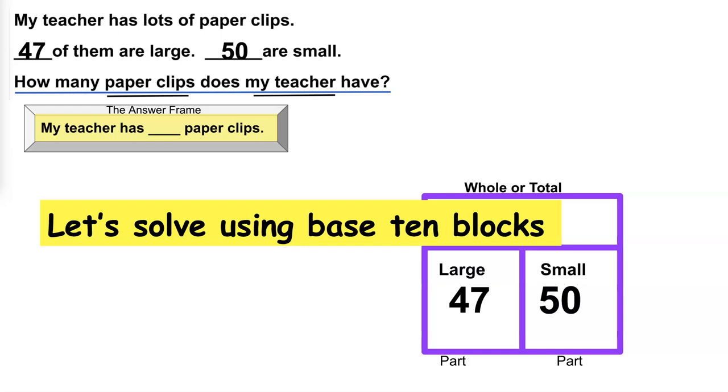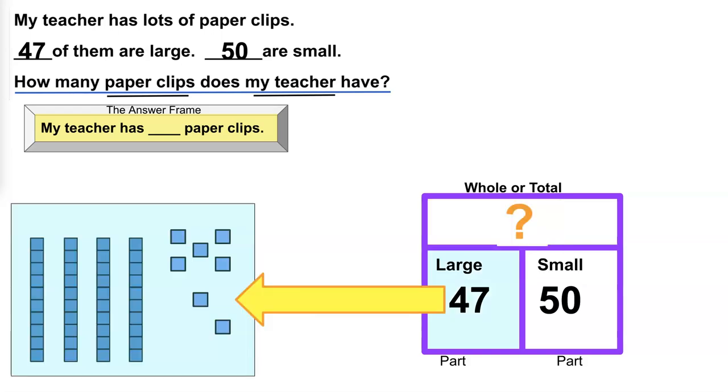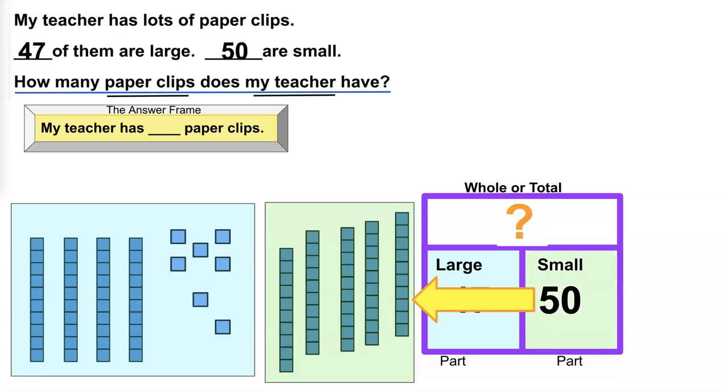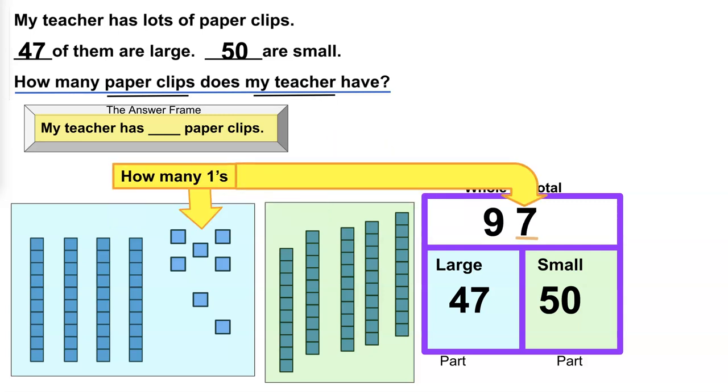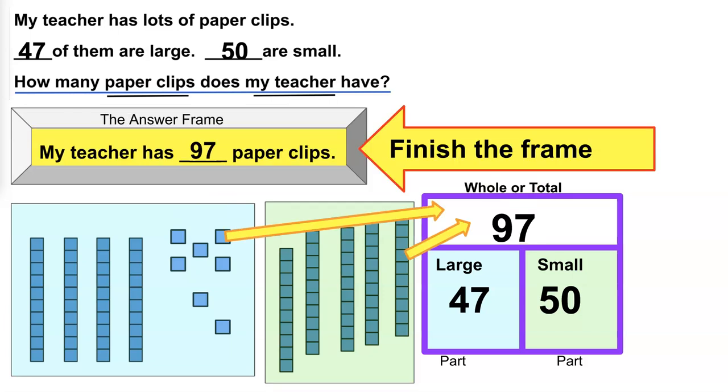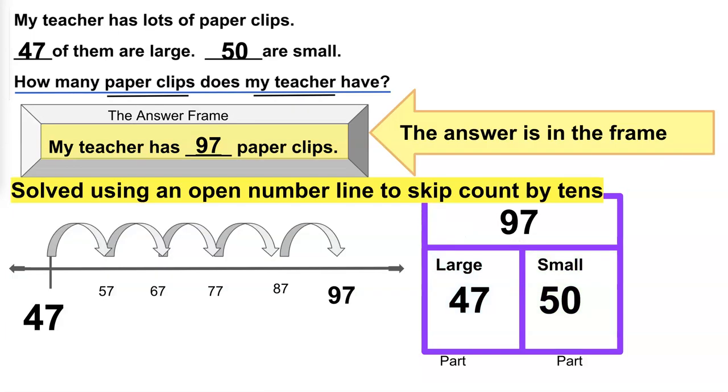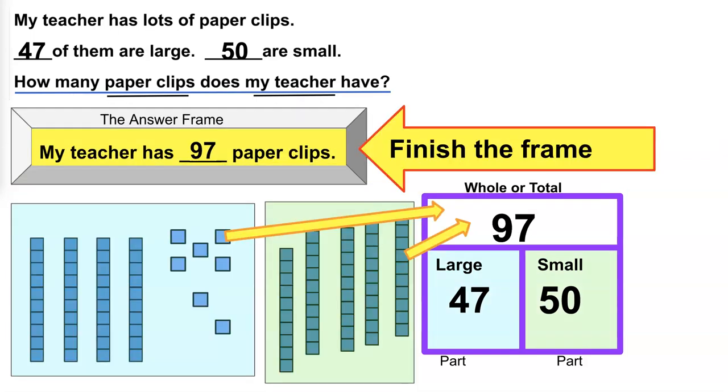Let's solve using base 10 blocks. I represent my large amount with base 10 blocks and my small amount. Now I need to put them together to find the whole or total. How many 10s? 9 10s. How many 1s? 7 1s. But we need to finish the frame to be complete. So whether we're using an open number line or base 10 blocks or some other method to solve, let's review the steps that we do to make that happen.